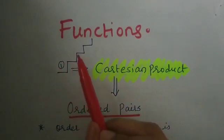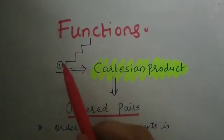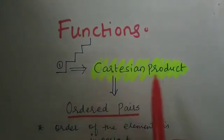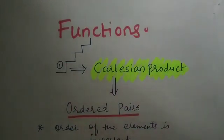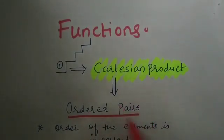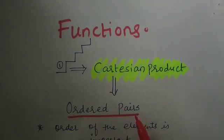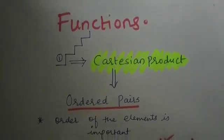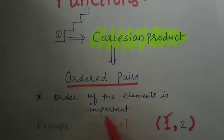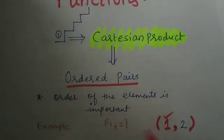For understanding functions, we are going to go step by step. The very first step is understanding what is a Cartesian product. I will be explaining Cartesian product by first explaining a small concept called ordered pairs. The word 'pairs' is familiar to you from school, but what is the additional thing that makes it an ordered pair? Whenever you form an ordered pair, a lot of importance is given to the order in which the elements are placed.